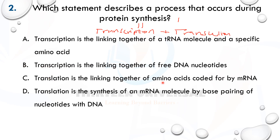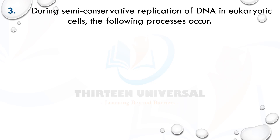Option C says translation is the linking together of amino acids coded for by messenger RNA — this is correct. In translation at the ribosome, amino acids are linked up and messenger RNA acts as a template that determines the amino acid sequence. Option D describes translation as the synthesis of a messenger RNA molecule — that is actually transcription. So the answer is C.